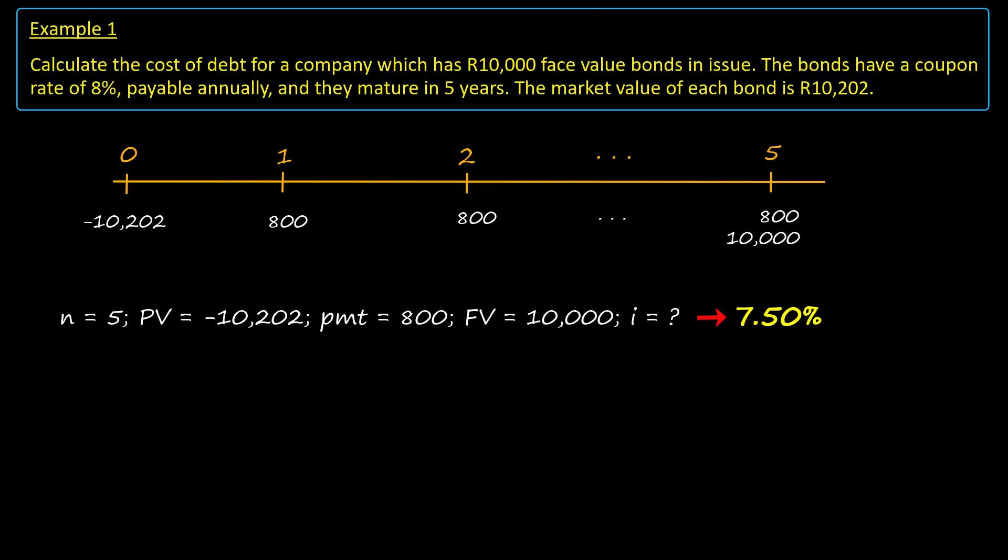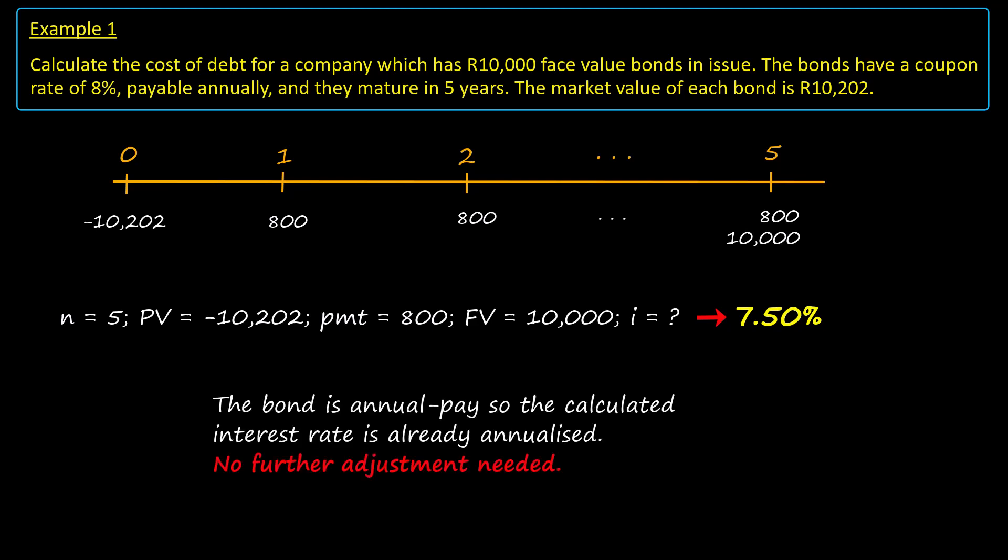Because this bond is annual pay, there is no annualization adjustment and the company's cost of debt is 7.5%.